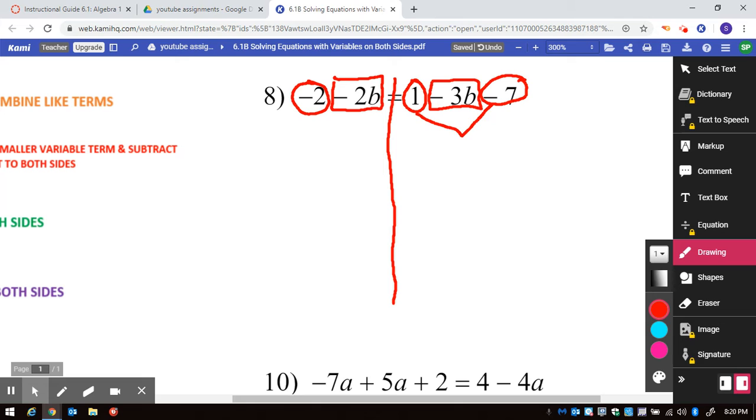So on the right-hand side, I have two circles. I am going to put them together. This means 1 minus 7, which happens to be 6. So I am just going to drop down the minus 3B. And over here, there is nothing to put together, so I am just also going to drop those down.